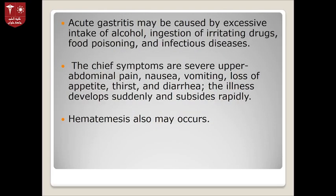Acute gastritis may be caused by excessive intake of alcohol, ingestion of irritating drugs, food poisoning, and infectious diseases. The chief symptoms are severe upper abdominal pain, nausea, vomiting, loss of appetite, thirst, and sometimes diarrhea. The illness develops suddenly and subsides rapidly — acute onset, sudden onset, and it can subside easily.